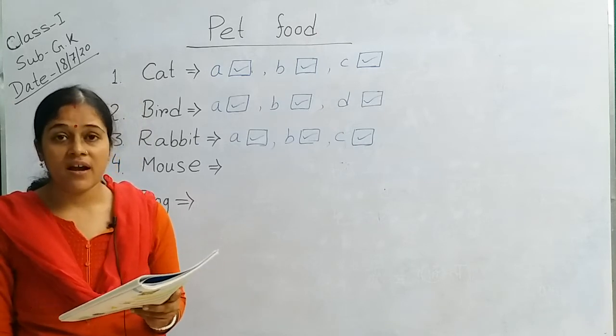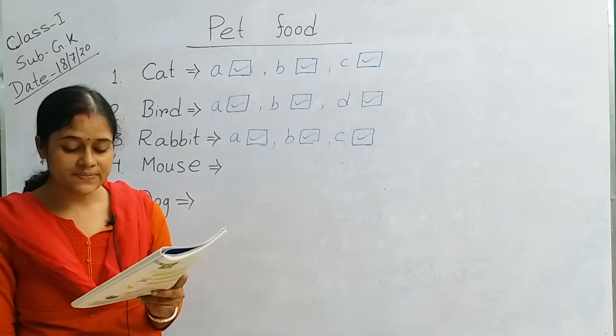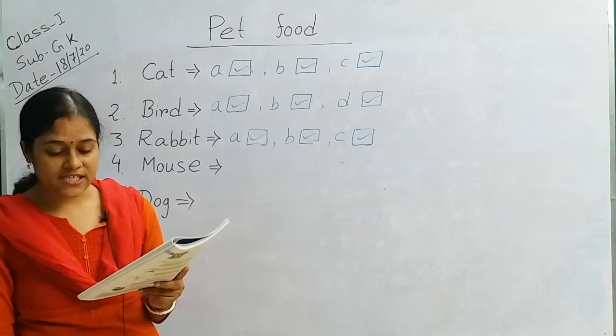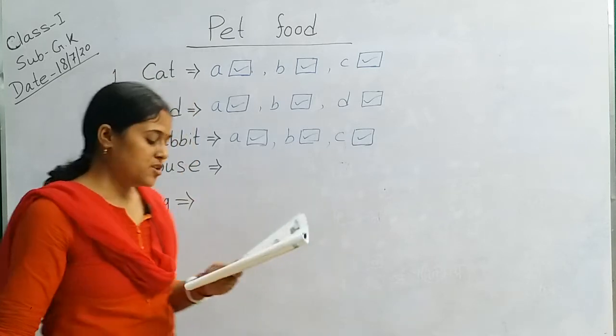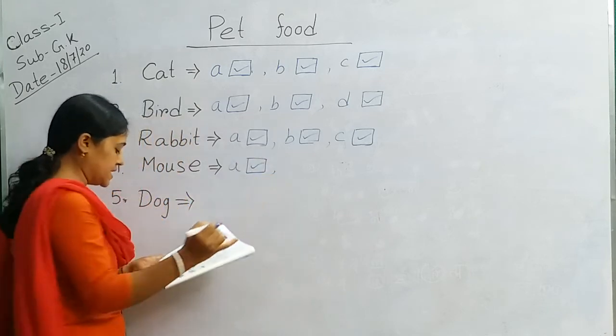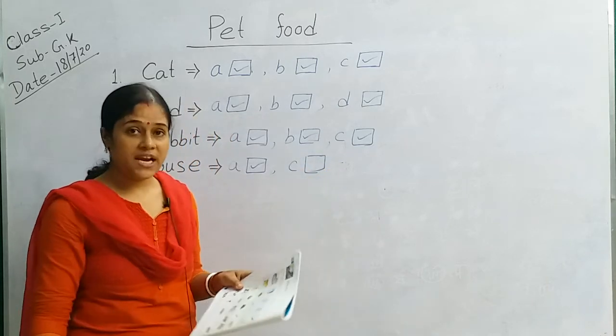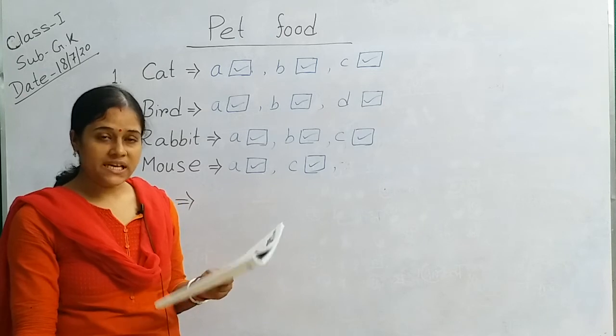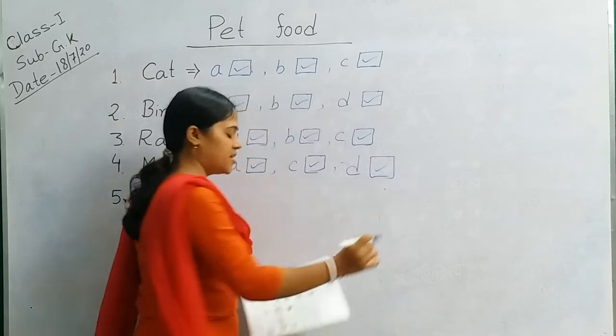B will not be the answer. C, a mouse eats slice of bread. Yes. And number D, a mouse eats food grains. These are food grains. It may be cereals or pulses. So number A put a tick mark. A mouse eats cheese. Number C, a mouse eats bread, slice of bread. Number D, mouse eats food grains. Put a tick mark.